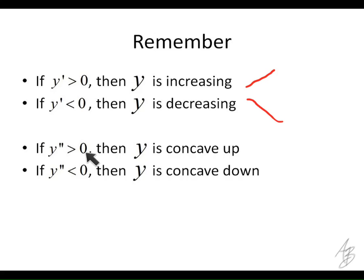A positive second derivative tells us that the function is concave up because the first derivative would be increasing, and a negative second derivative tells us the first derivative is decreasing and therefore the function is concave down — we might get something that looks like that.